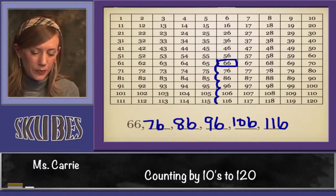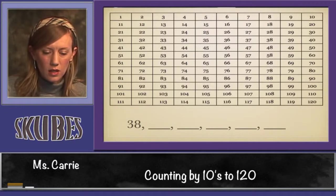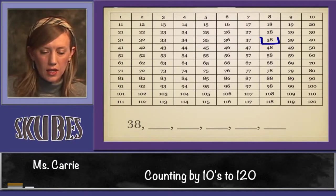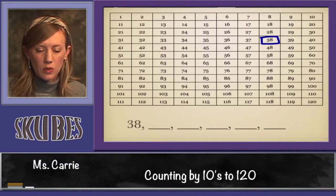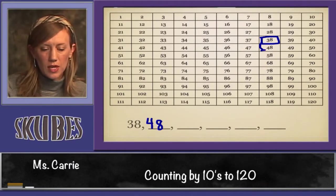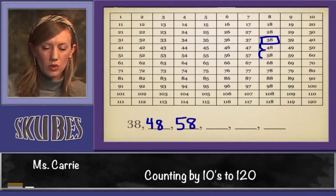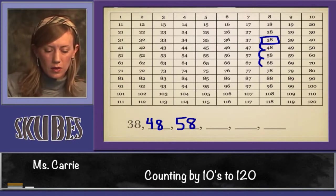Let's start with one more number. Let's start with 38. Let's find 38. We jump down one, we get to 48. We jump down 10 more, we're at 58. We jump down 10 more, we're at 68.